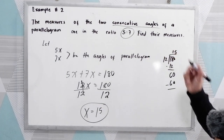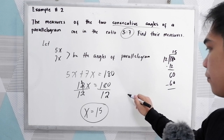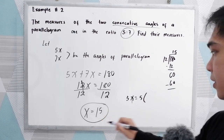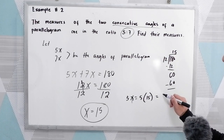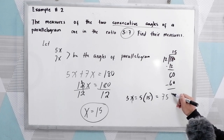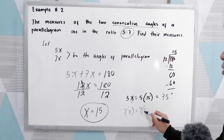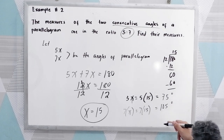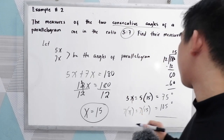Now find their measures by substituting. So 5x equals 5 times 15, that is 75 degrees. And the other angle is 7x equals 7 times 15, that is 105 degrees. To check, their sum must be 180: 75 plus 105 is 180, confirming the two consecutive angles are supplementary.